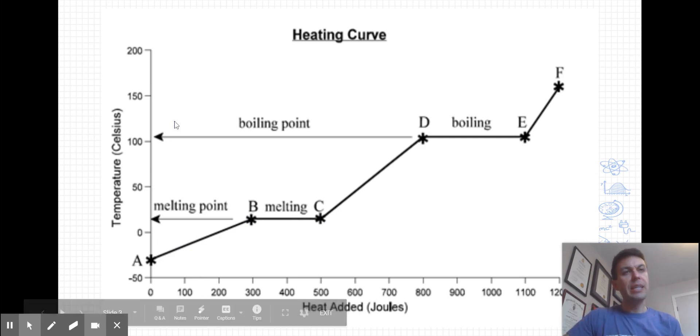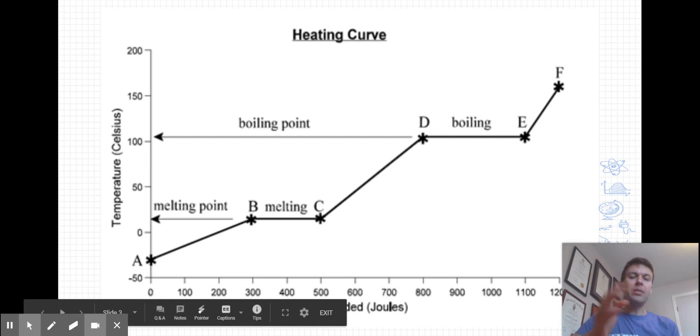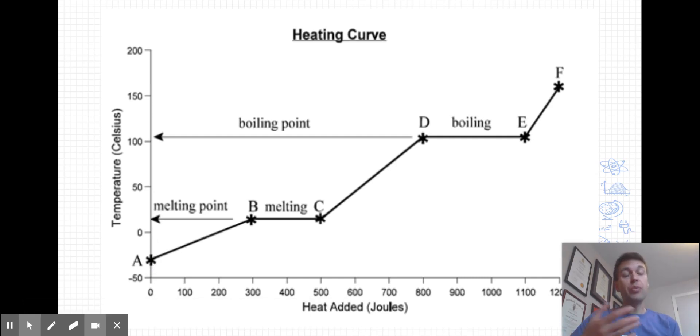Now, you're familiar with the heating curve from earlier science courses. So you know that a substance doesn't just increase its temperature in a linear manner. Let's start off here at point A and describe from point to point what is changing and what's staying the same.